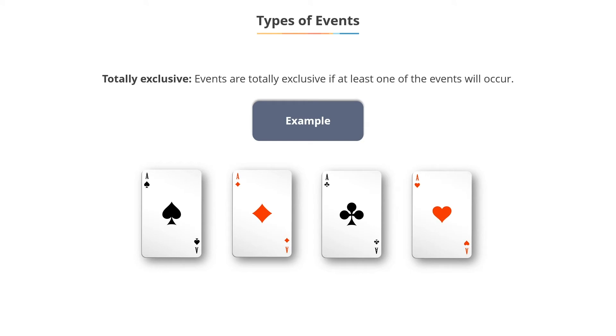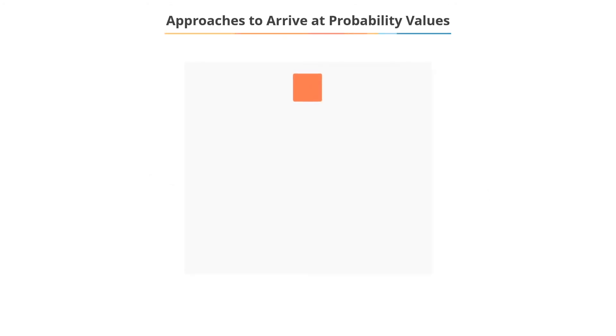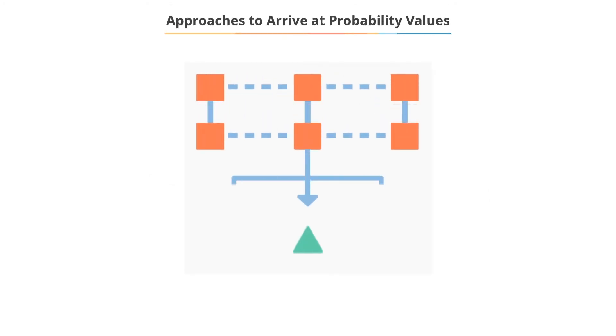The set of all possible outcomes is referred to as a sample space. We will now discuss the three approaches to obtain the values of probabilities of events.